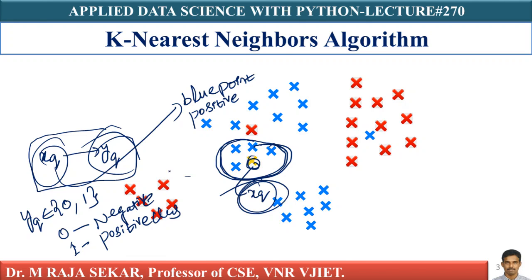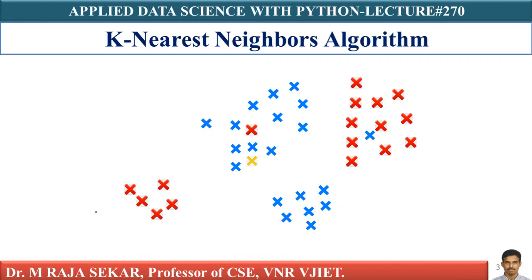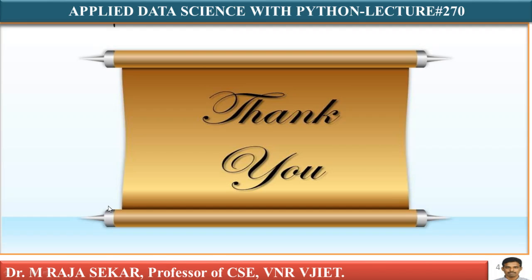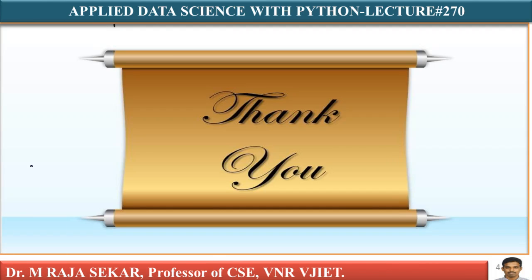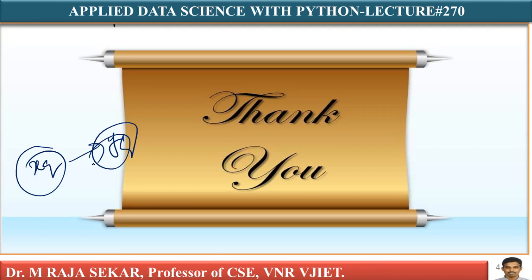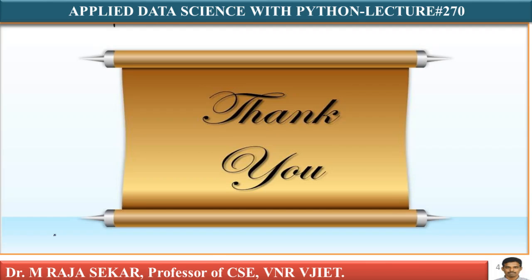Given XQ, our whole task is to find yQ. For binary classification, yQ belongs to {0, 1}: 0 means negative class and 1 means positive class. I will summarize all these steps in the next lecture, lecture number 271. For now, just understand what a neighborhood is and how, given a query point XQ, one can find its corresponding yQ. Thank you very much.